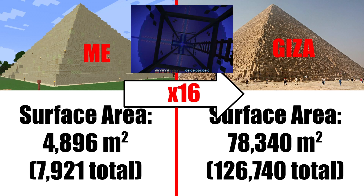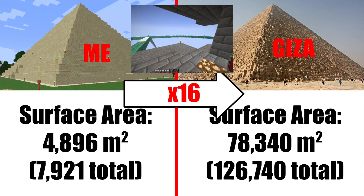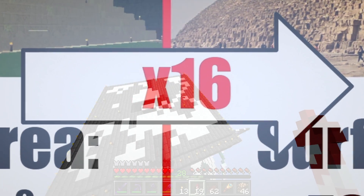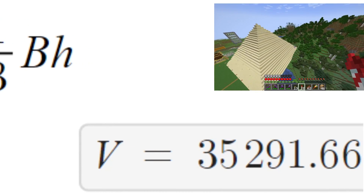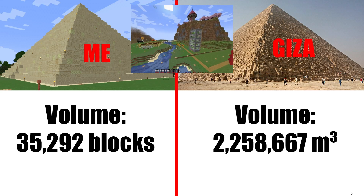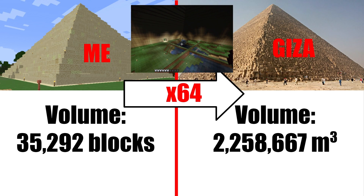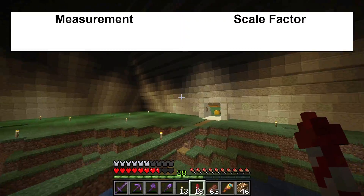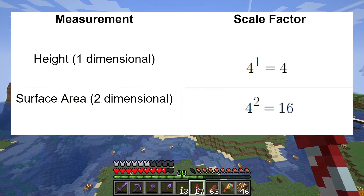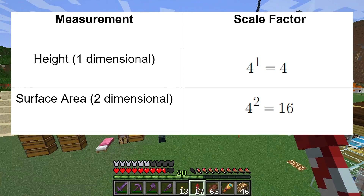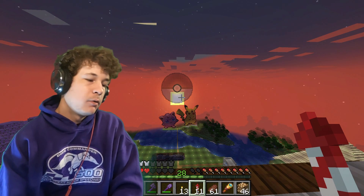So about 5,000 blocks versus about 78,000 blocks — the Great Pyramid is about 16 times bigger in surface area. That's why I did not build it to actual scale, because it would have taken 16 times as long. The volume can be calculated with the pyramid formula — my pyramid's volume was about 35,000 blocks compared to the massive 2 million blocks in the Great Pyramid, which is about 64 times bigger. What's interesting is that the scale factor increases by increasing powers as we look at increasing dimensions: height is one-dimensional so scale factor is 4; surface area is two-dimensional so it's 4² = 16; and volume is three-dimensional so it's 4³ = 64.